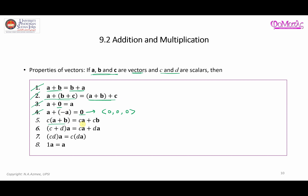Fifth, c(A + B) = cA + cB (distributive property). Sixth, (c + d)A = cA + dA — also distributive, distributing c and then d to A. Seventh, (cd)A = c(dA) — associative with scalars. And finally, multiplying a vector by scalar 1 returns the same vector A. That completes this video — thank you for watching.